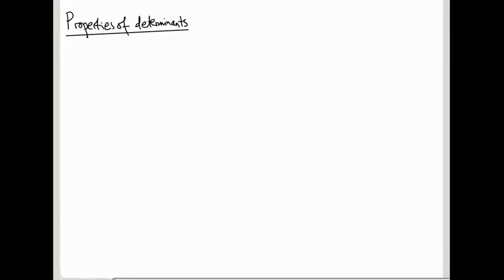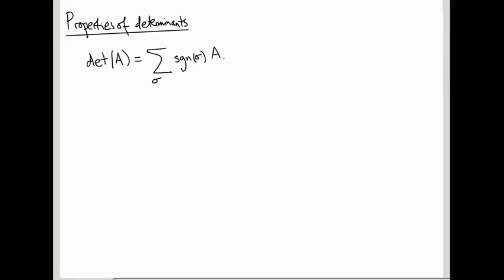In the last video, we defined the determinant of an n by n matrix, and there was a formula: the determinant of a matrix A is the sum over all n-factorial permutations sigma of the sign of the permutation — which is either plus or minus 1 — times a product of matrix entries, one from each row: A_{1,sigma(1)}, A_{2,sigma(2)}, all the way up to A_{n,sigma(n)}.